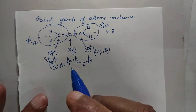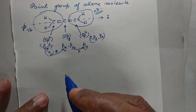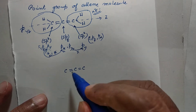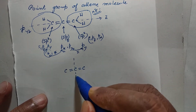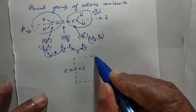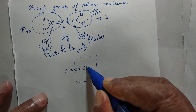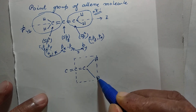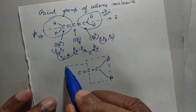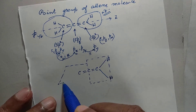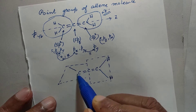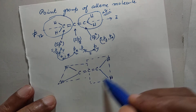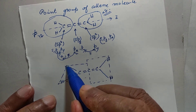Therefore, a neat diagram for the molecular structure is like this: C double bond C double bond C. One plane contains hydrogen atoms here, and another plane is a perpendicular plane. One plane is perpendicular to another plane. This is the molecular structure of allene.